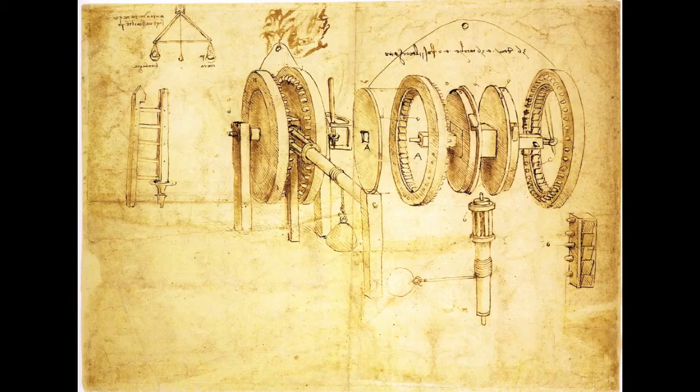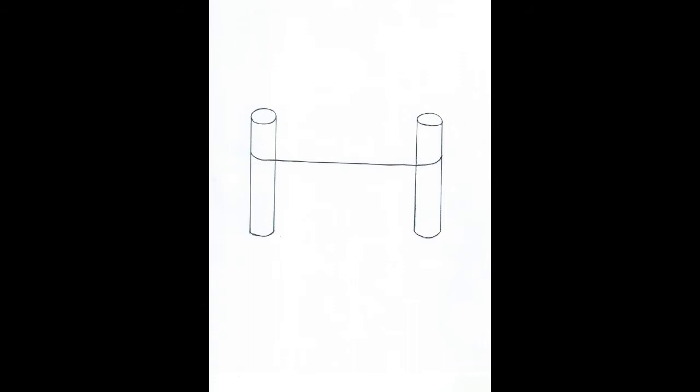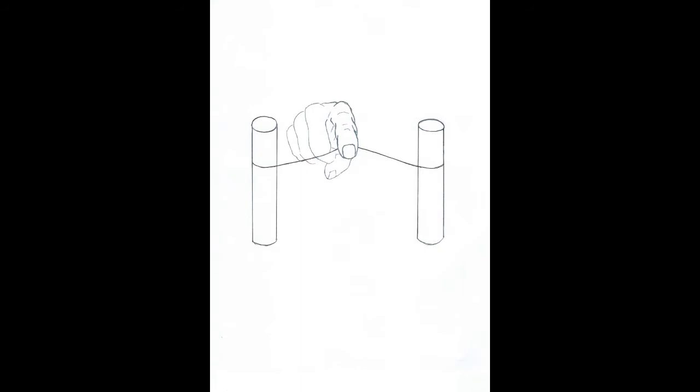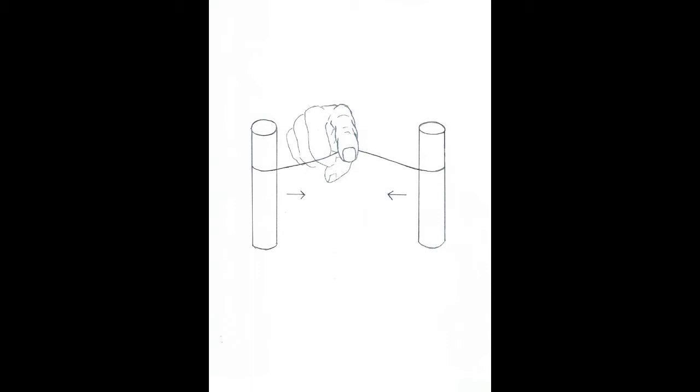Since Leonardo is renowned for his scientific drawings of how things work, it seems appropriate to describe the mechanics of his composition by means of a diagram. Imagine that there are two posts joined by a taut wire. Consider what happens when this wire is pulled back — as the wire is pulled, pressure is applied to the two posts, pulling them toward each other.